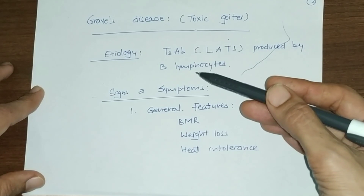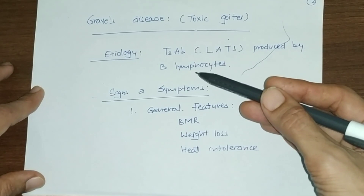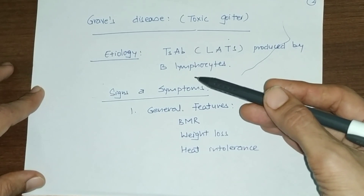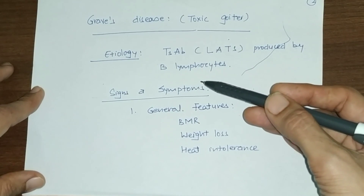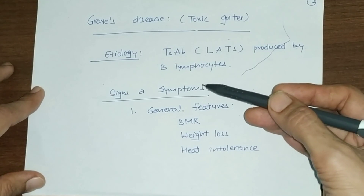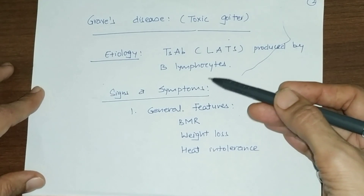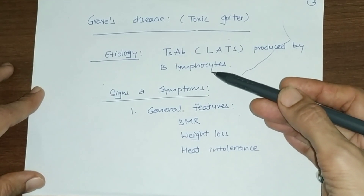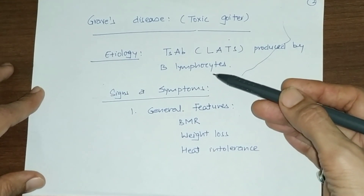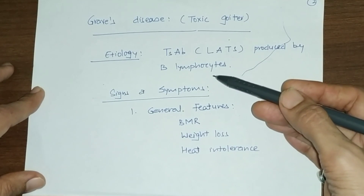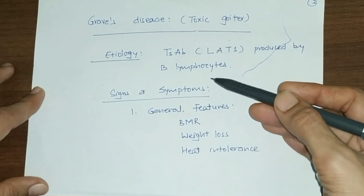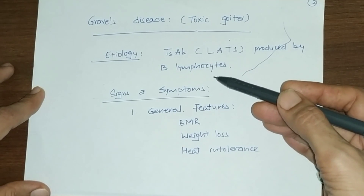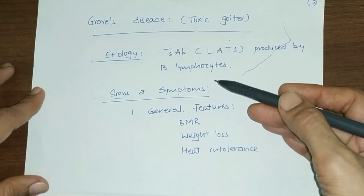The mechanism of action of thyroid stimulating antibodies is that they bind to TSH receptors present on the thyroid gland, and their actions are similar to TSH — they mimic the action of TSH, which is to stimulate the thyroid gland and increase its secretion.